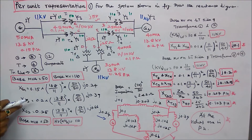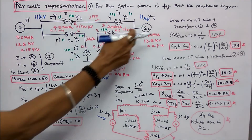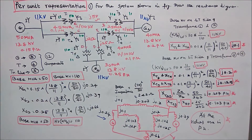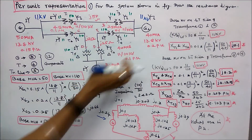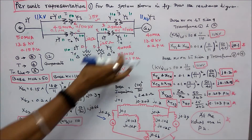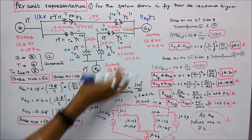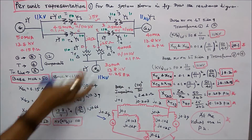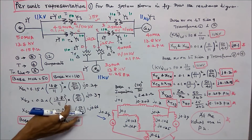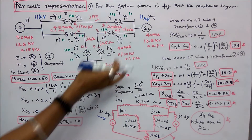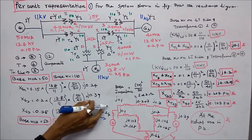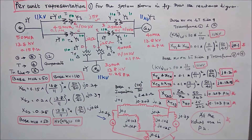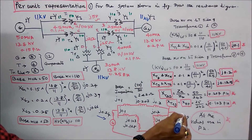Generator 2 per unit reactance = 0.20 × (13.8/11)² × (50/40) = j0.39.